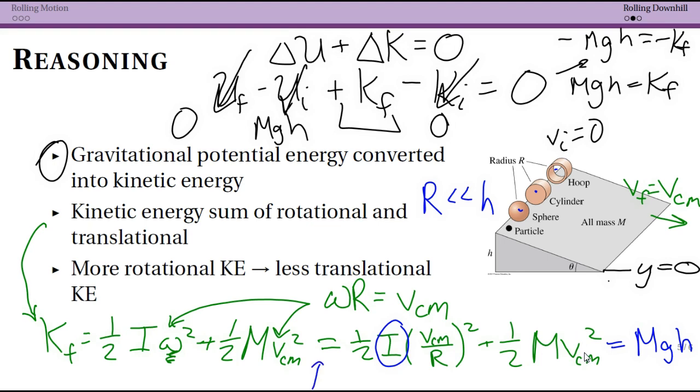So that's the logic here. The larger the value of I is, the smaller v_cm must be. Not only because these two are multiplied, but because you have an additional v_cm term here, so the bigger this term is overall, the smaller this term must be.